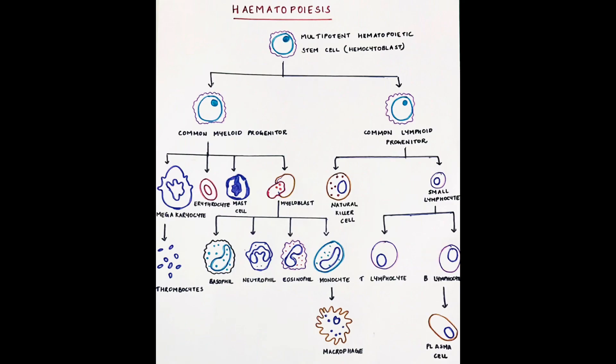As you can see in the figure, in hematopoiesis a multipotent stem cell differentiates along one of two pathways, giving rise to either common lymphoid progenitor cells or common myeloid progenitor cells. Myeloid cells consist of monocytes, eosinophils, basophils, neutrophils, macrophages, erythrocytes, megakaryocytes, and platelets.